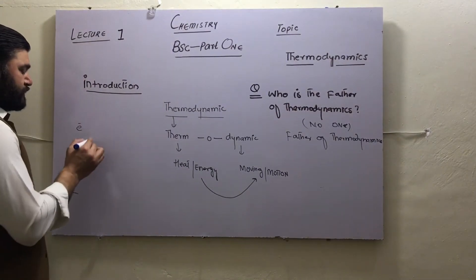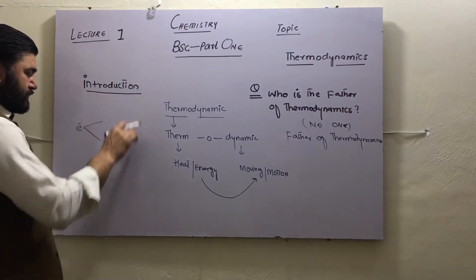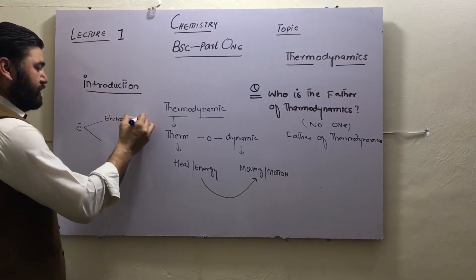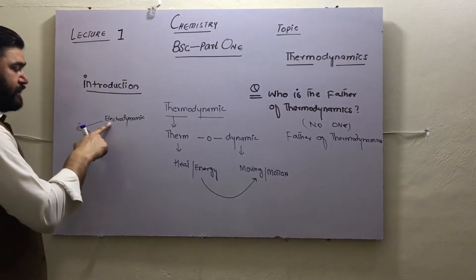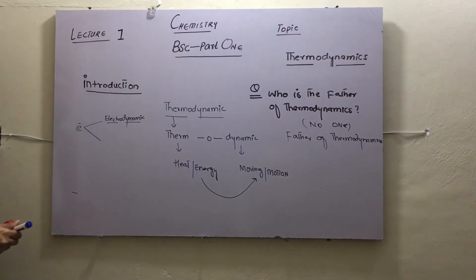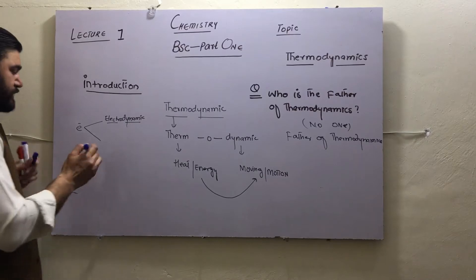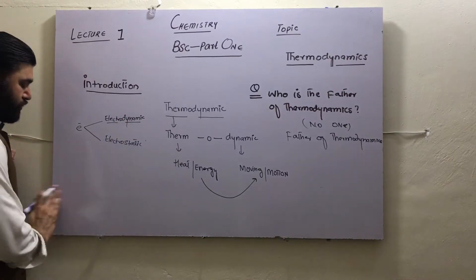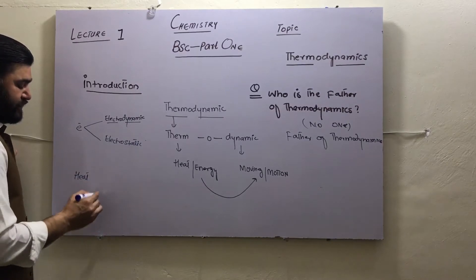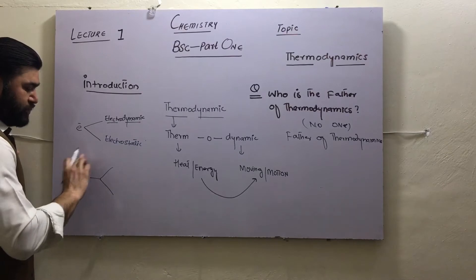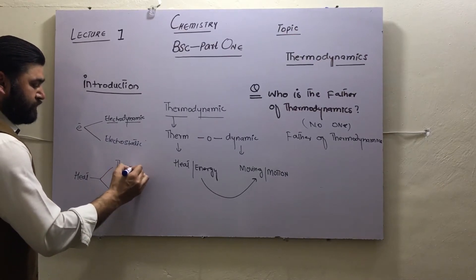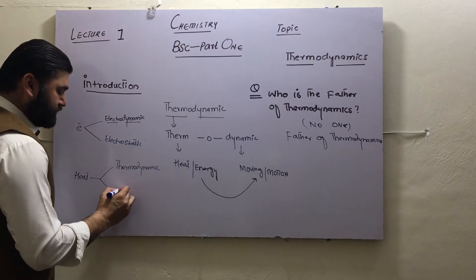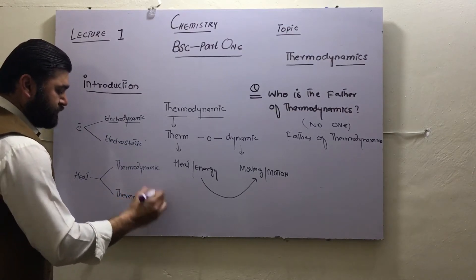For example, if a charged particle like an electron moves from one orbit to another, we call it electrodynamics — because it moves from one body to another. If the electron is not moving, we call it electrostatic. Similarly, if a body has heat and that heat is transferred from one body to another, we call it thermodynamic. When that heat does not move, we call it thermostatic.